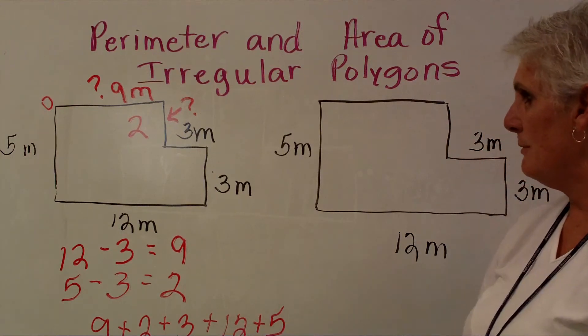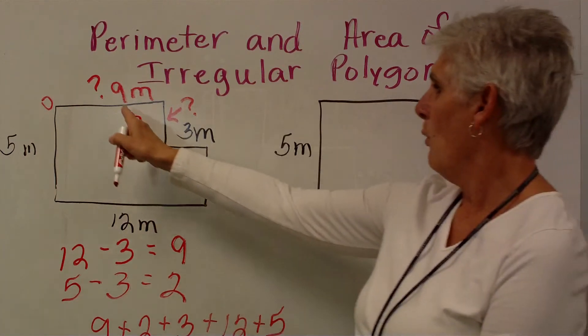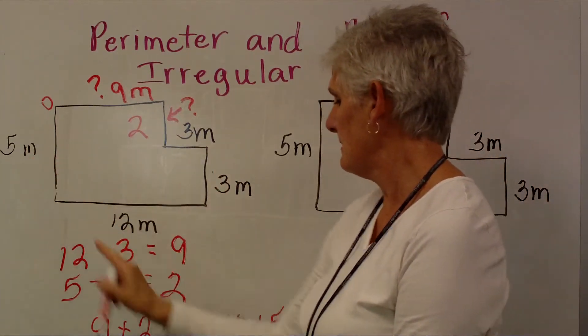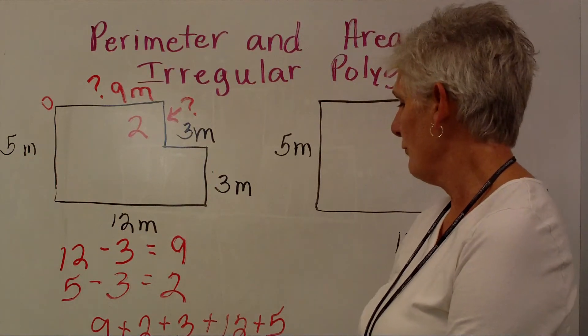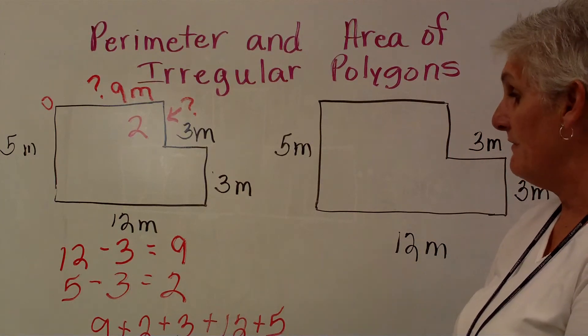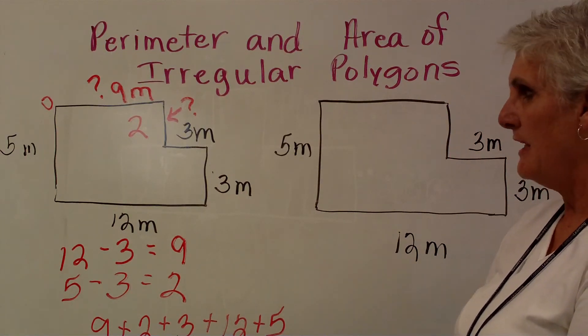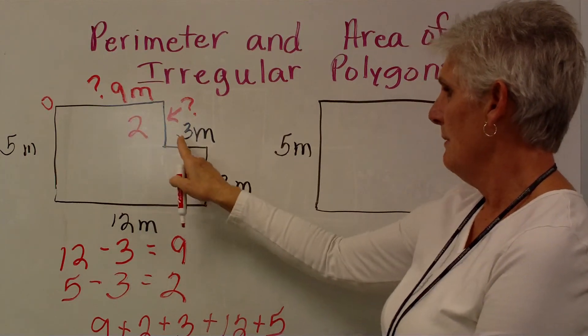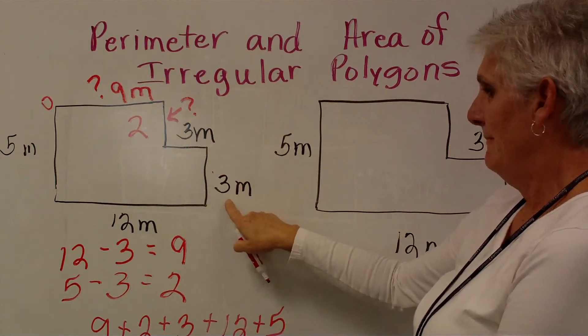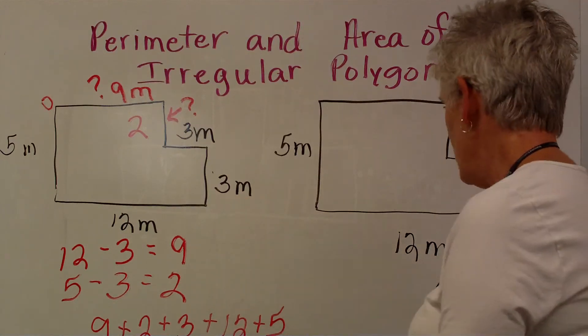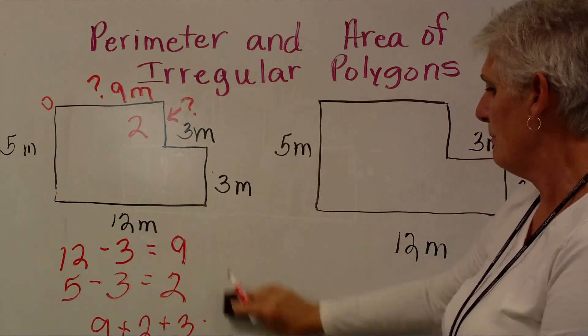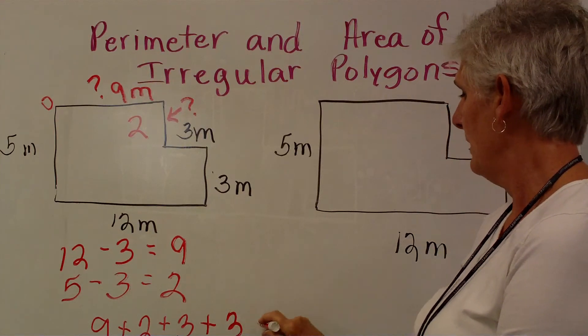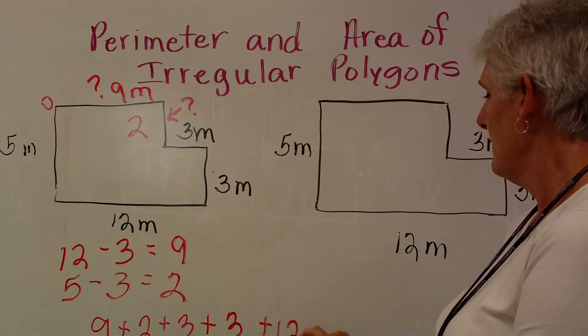Have I left out any numbers? Let's count. 1, 2, 3, 4, 5, and 6. 1, 2, 3, 4, 5. Yes, I've left a number out. I need to go back and check it again. I have a 9, plus a 2, plus a 3. This is the number I left out. We need to count those sides and numbers twice. I have a 3, plus a 3, plus a 5.